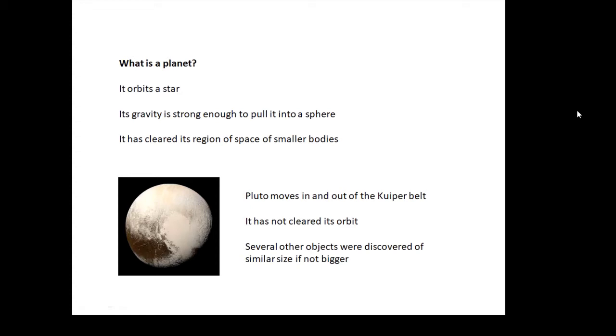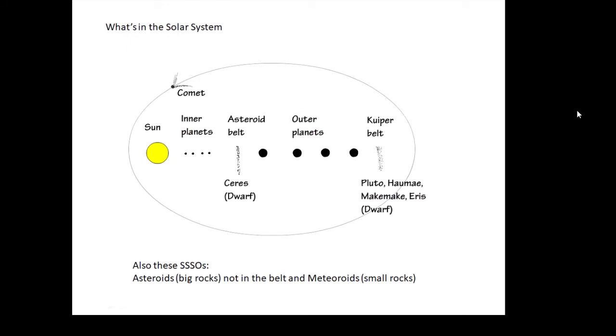The decision was made to stop it being a planet when another one was discovered called Eris, which is also in the Kuiper belt or on the edges of the Kuiper belt, and it's bigger than Pluto. Several others were discovered, so Pluto was relegated—it's not a planet anymore.